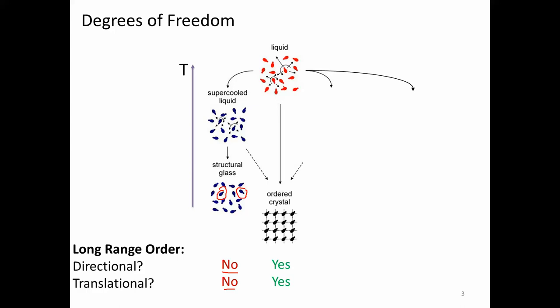That's very different from what we think of as ordered crystals. Ordered crystals generally occur when the system is allowed to cool slowly, and they have both directional and translational long range order. So if I know the position of one unit, I could tell you where I'm likely to find another one some distance away, and I could also tell you the orientation — the direction that it's pointing in.